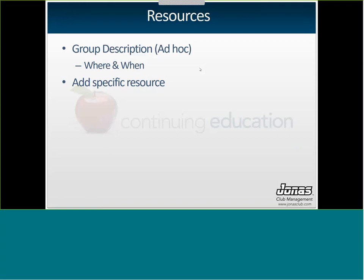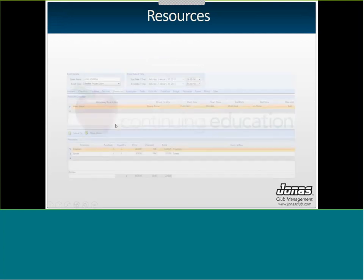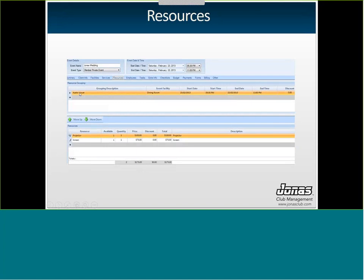For resources on private events, the entry screen looks the same as services. You can type in your group names freely — one line called Resources, or separate groups like AV Equipment, Rentals, Decorations, depending on how you want them organized on the BEO. Add the group first, then add the specific resource. For example, group Audio Visual with projector and screen. The resource setup shows one available, and you're reserving one — once it's booked, another event cannot add the same resource.